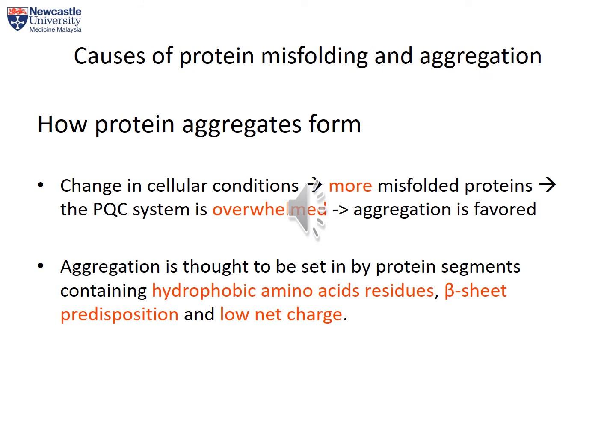Now we will look at protein aggregation. Protein aggregation forms when there is a change in cellular conditions, causing disruption of intermolecular and intramolecular interactions and subsequently leading to misfolded proteins. When the PQC system is overwhelmed by the amount of misfolded proteins, the formation of protein aggregates is preferred. Aggregation is thought to be initiated by protein segments containing hydrophobic amino acid residues, beta sheet predisposition, and a low net charge — features that allow proteins to clump together and precipitate out from the aqueous solution.